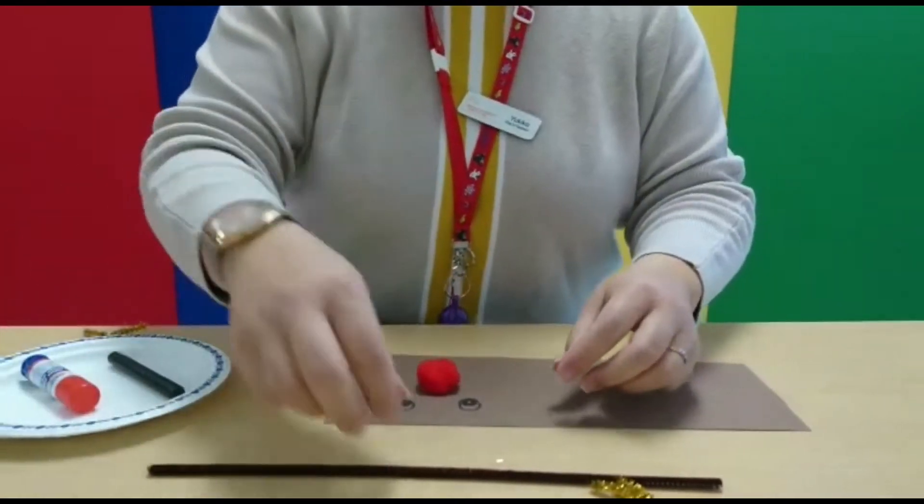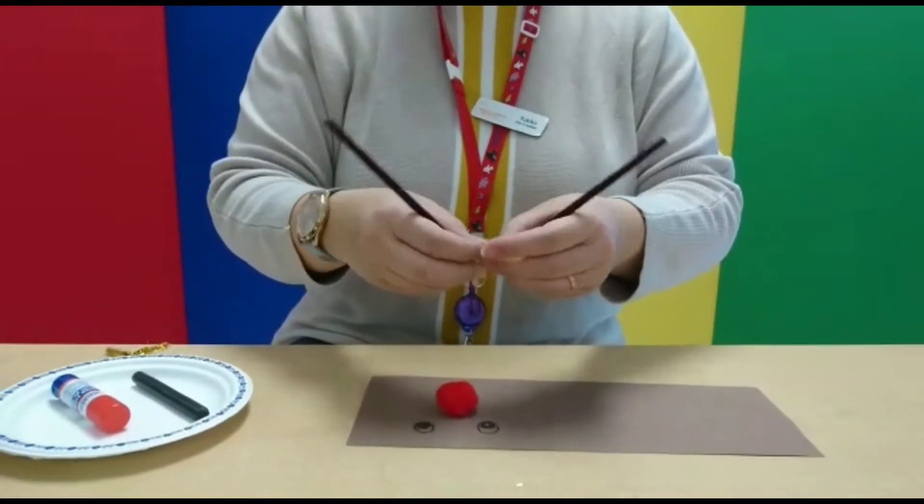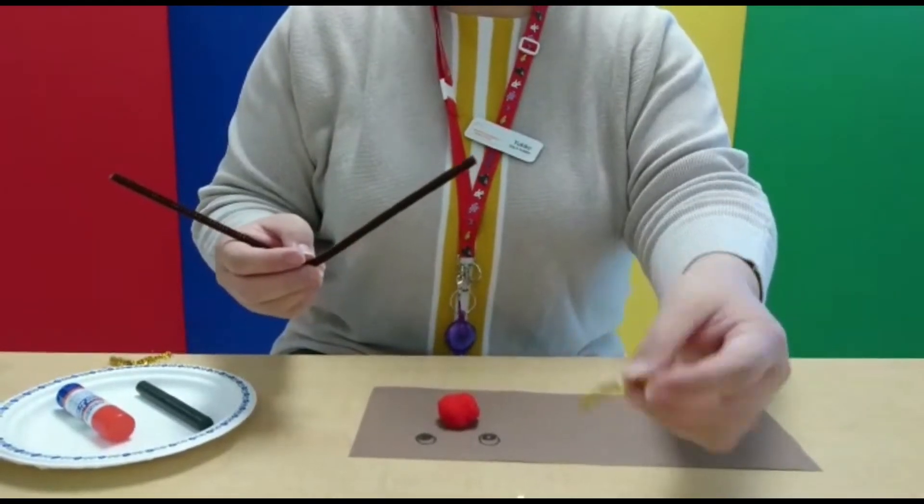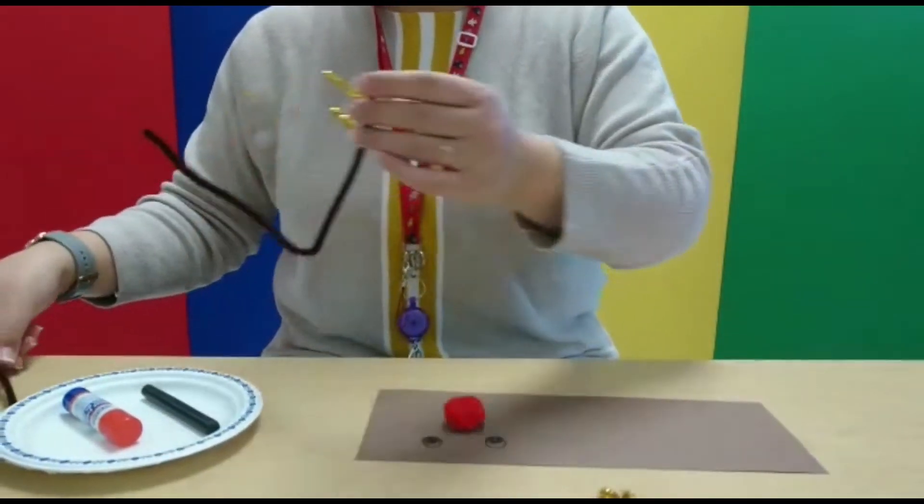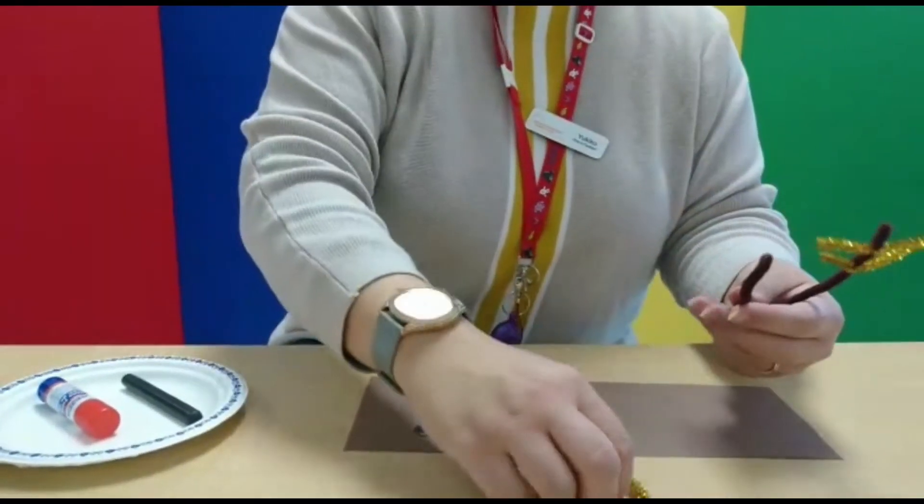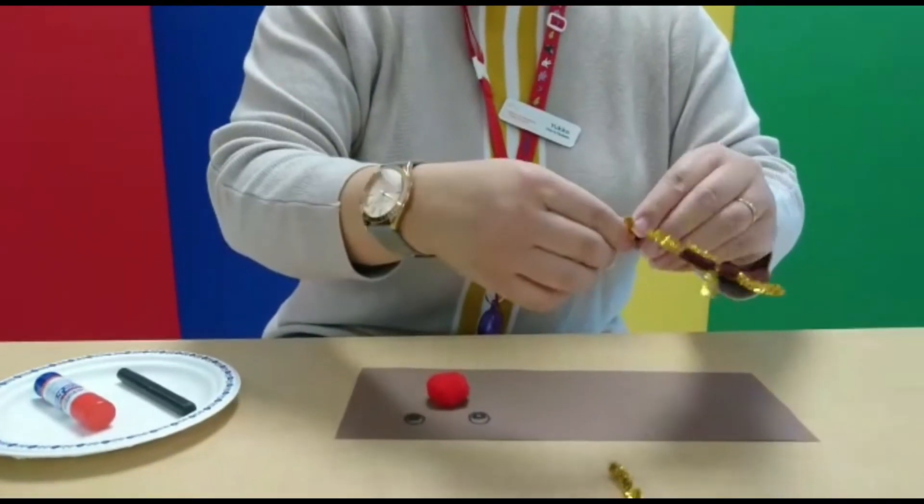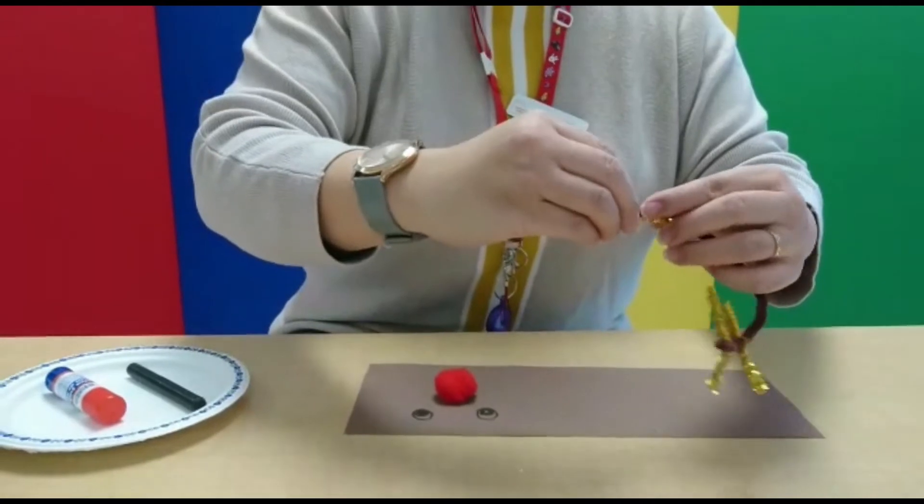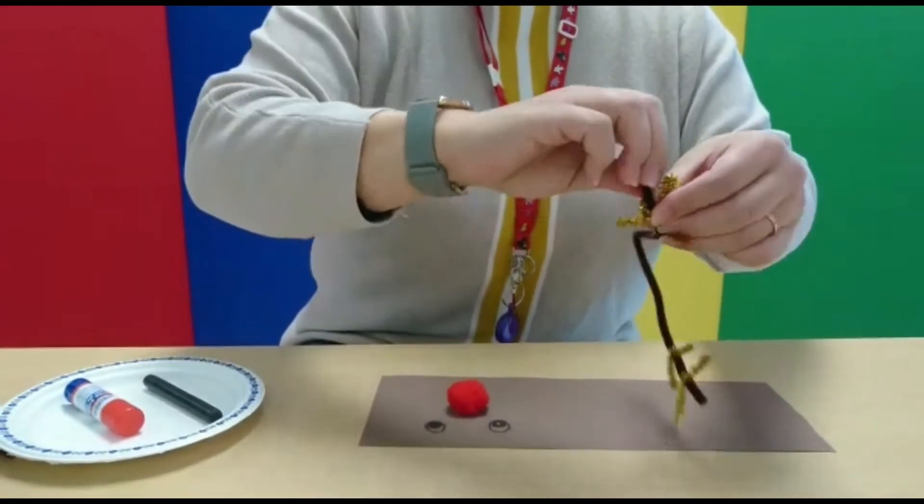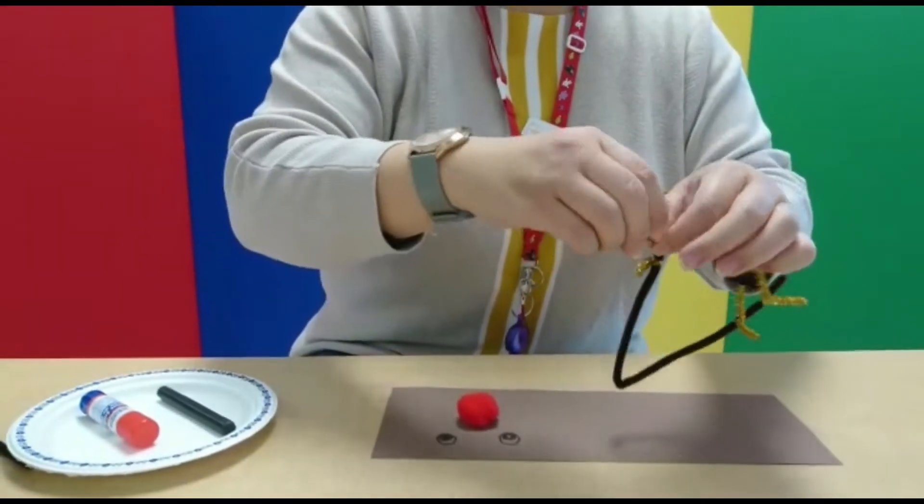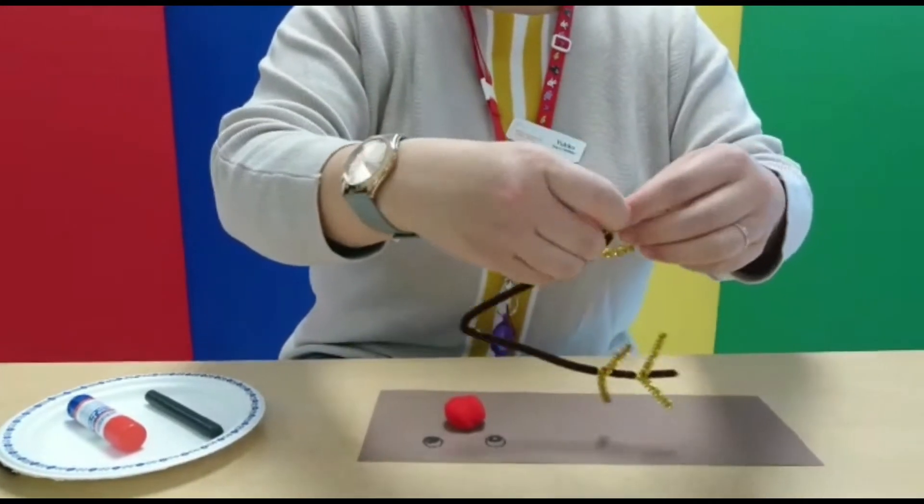And the pipe cleaner, you bend it in the middle and then tighten those, all those to one, just like this. So I'll do two more.